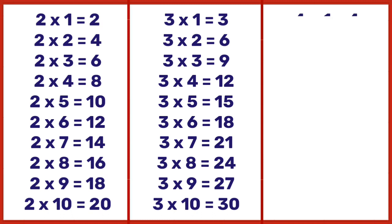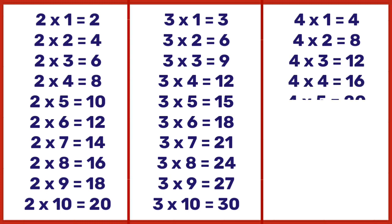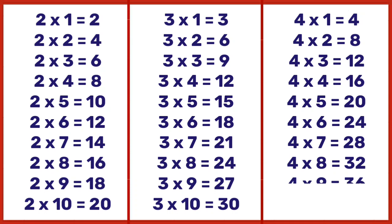4 ones are 4, 4 twos are 8, 4 threes are 12, 4 fours are 16, 4 fives are 20, 4 sixes are 24, 4 sevens are 28, 4 eights are 32, 4 nines are 36, 4 tens are 40.